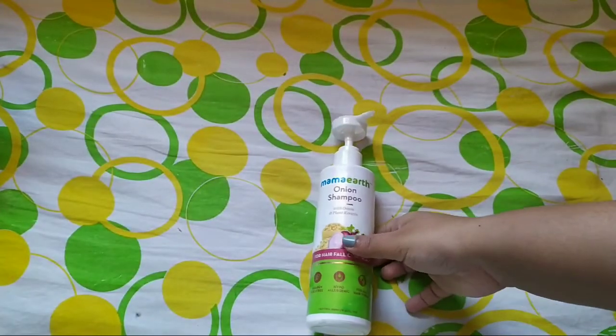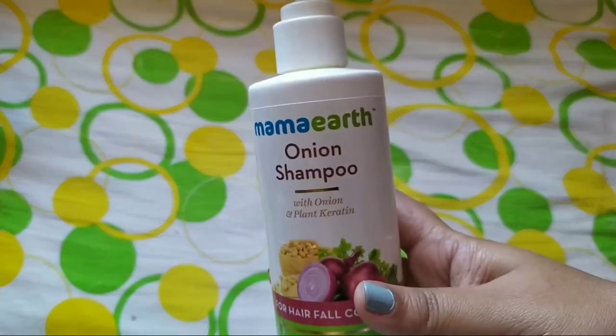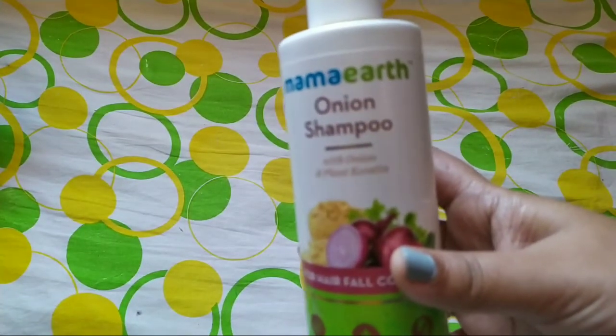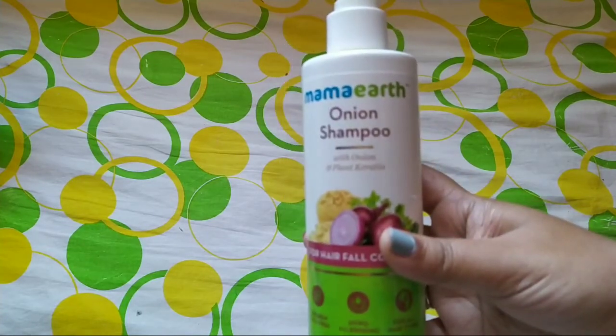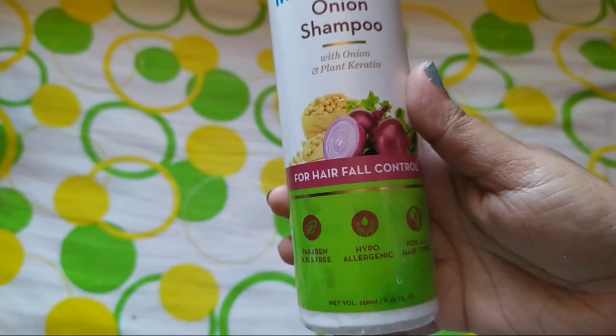Hey guys, welcome to my channel. Today I'm sharing a review of this Mamaearth Onion Shampoo which contains onion seed and plant carotene. Onion seed basically stimulates the scalp, promotes blood circulation, and helps in hair regrowth.